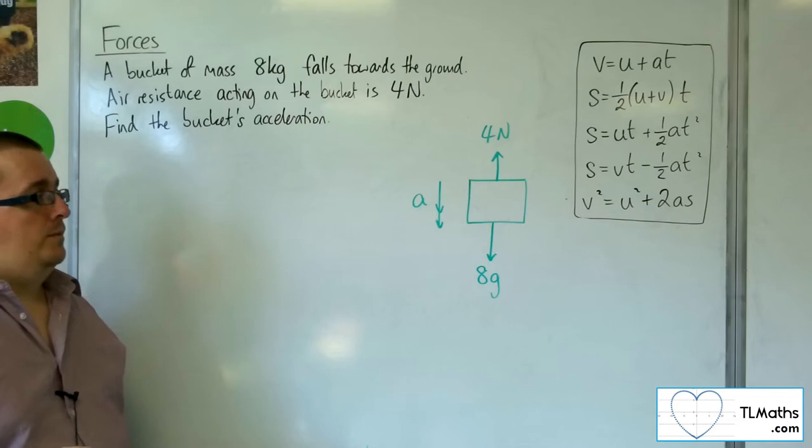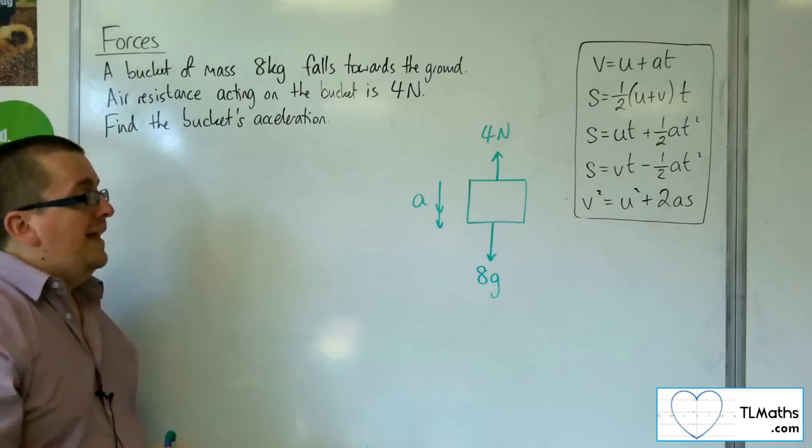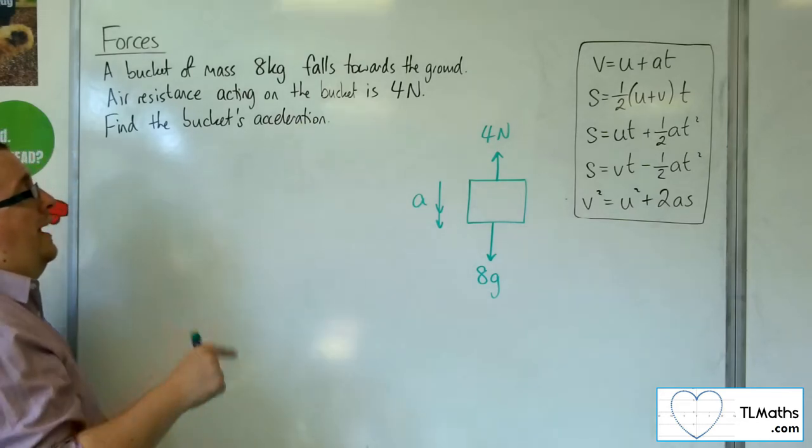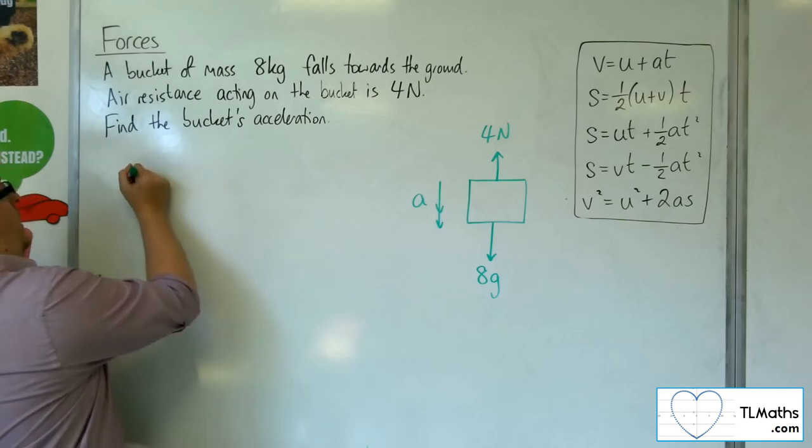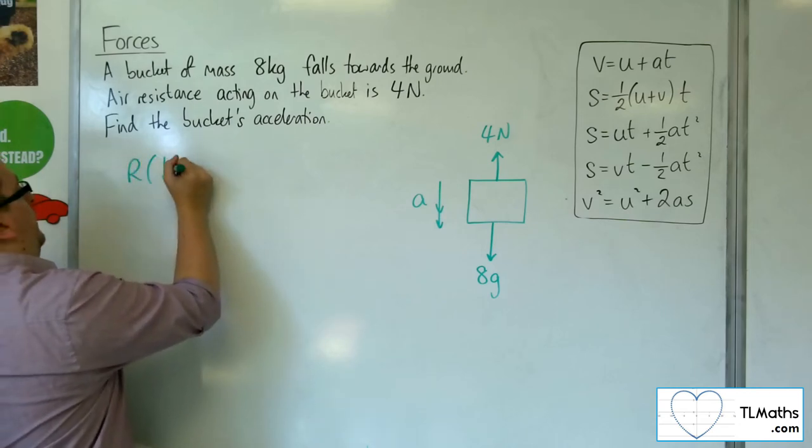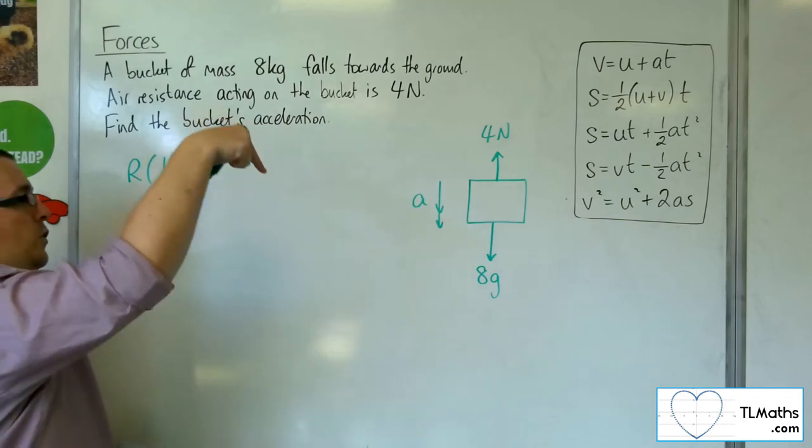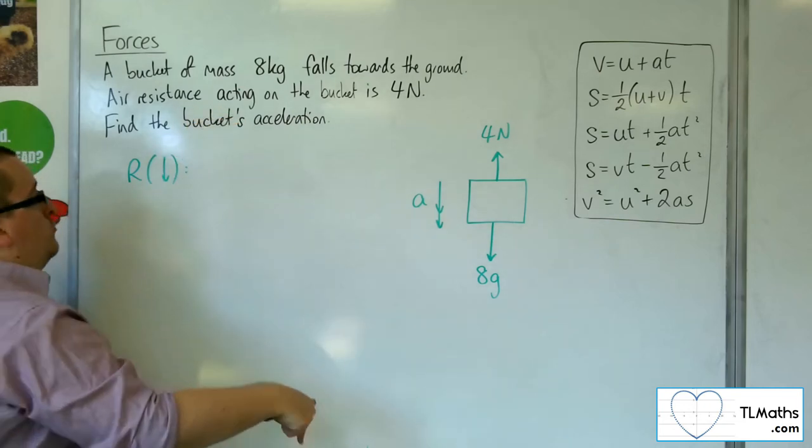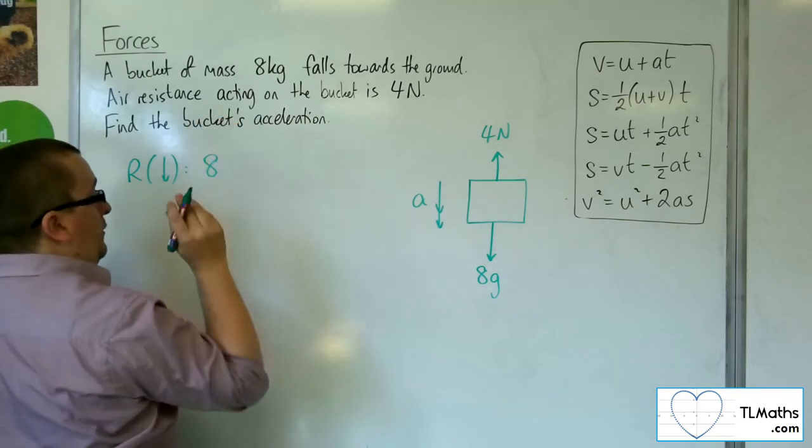So that's the picture of what's going on. If I take downwards as positive, I can resolve downwards, and I've got 8g working in that direction. So 8 times—I'm going to use 9.8 as gravity.